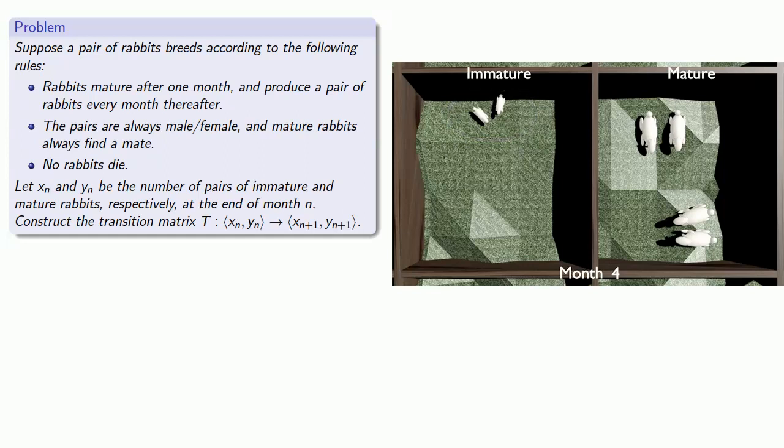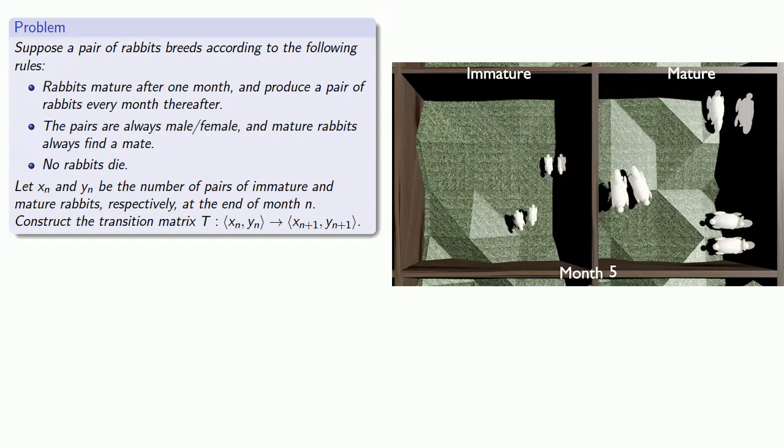If we go another month, the two mature pairs produce two more immature pairs. The immature pair becomes a mature pair. And so now we have three mature pairs and two immature pairs. And we can continue this logic as far as we want.